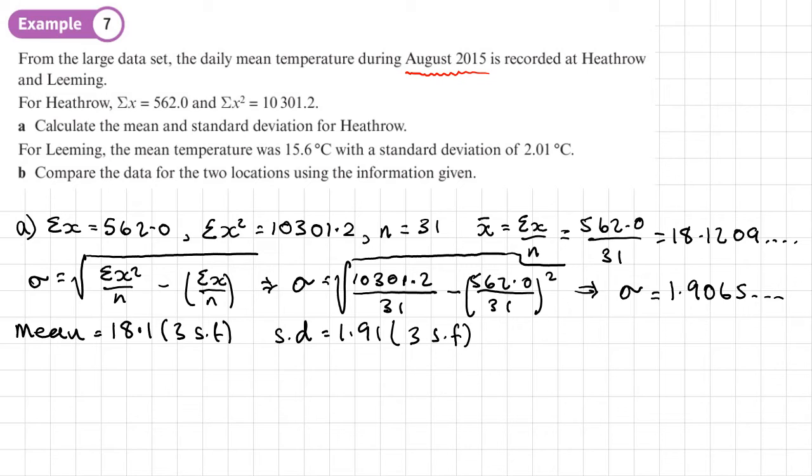So now on to part B. And it says for Leeming, the mean temperature was 15.6 with a standard deviation of 2.01. Compare the data for the two locations using the information given. So we're going to compare a measure of location - we're going to compare the mean - and a measure of spread, and that's going to be the standard deviation.